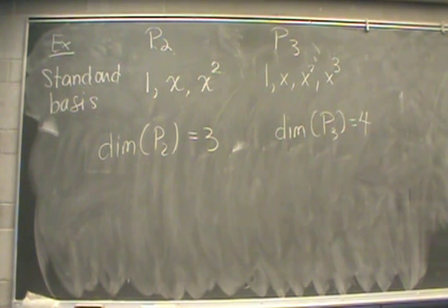Next, let's look at polynomial vector spaces. Again, I'm going to consider these as real vector spaces. The standard basis for P_2 are the three polynomials 1, x, and x^2. They will span P_2, and they're all linearly independent. So the dimension of P_2 is equal to 3.